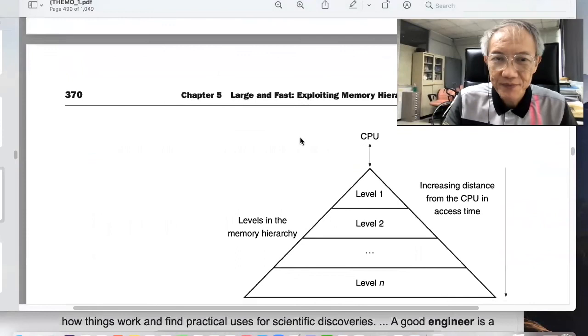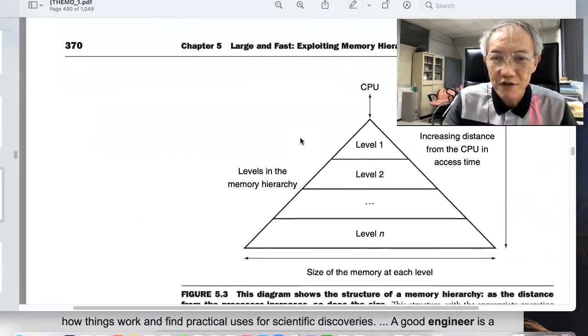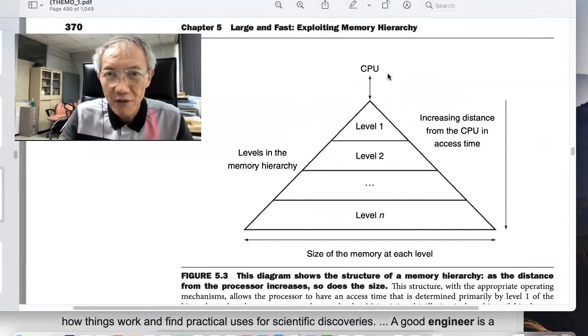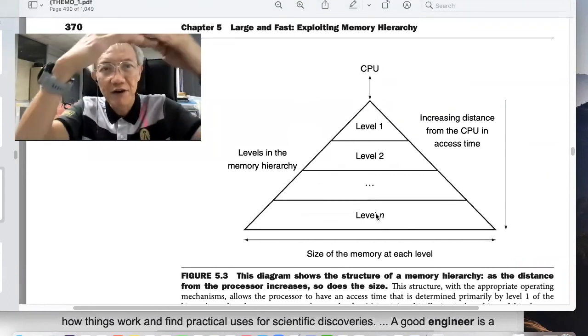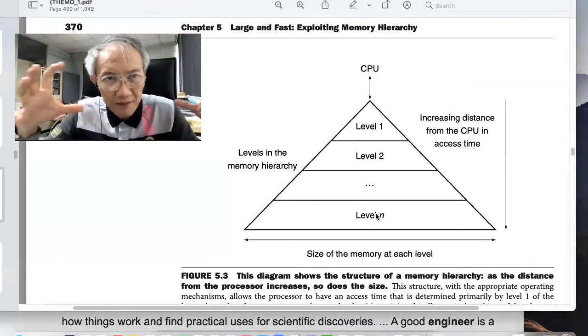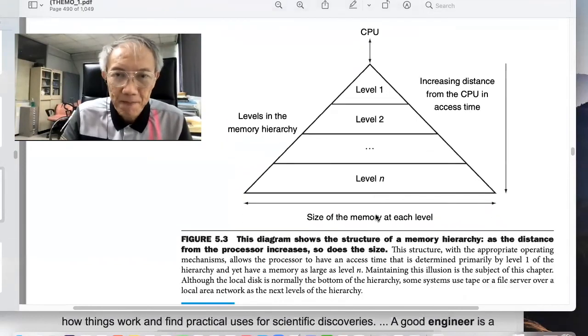All right. So with that main overall clear. Now, you can see that this picture reflect our discussion. The fastest one is CPU. And there's increasing level further from CPU and the block, the copy of memory is larger.